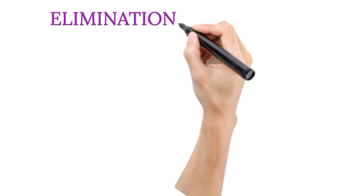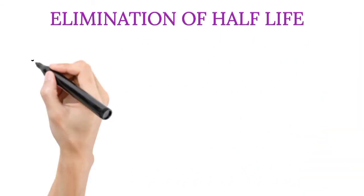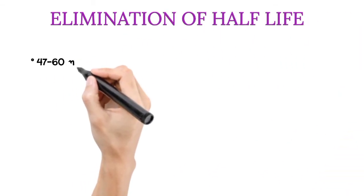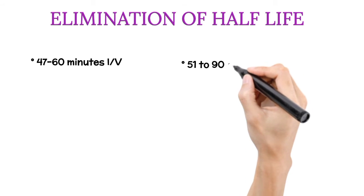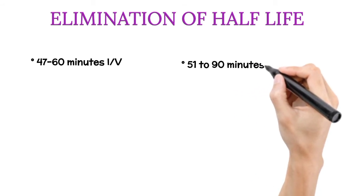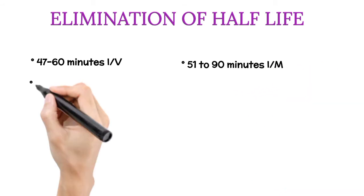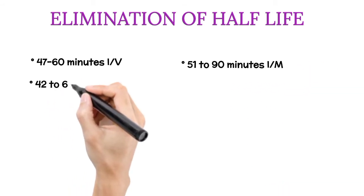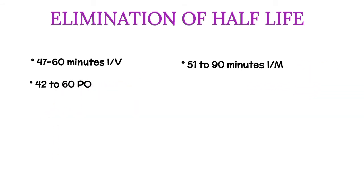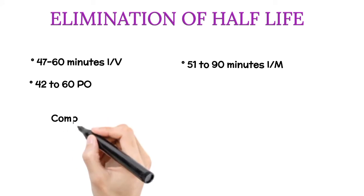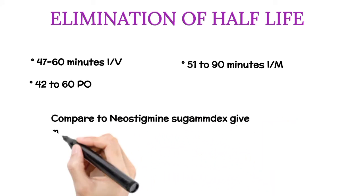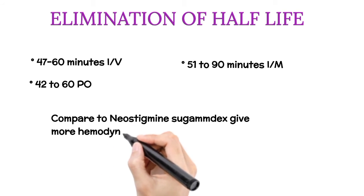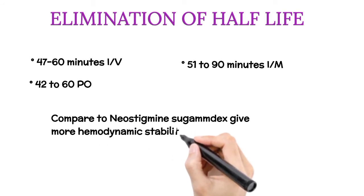Elimination half-life: 47–60 minutes intravenous, 51–90 minutes intramuscular, and 42–60 minutes orally. In children, the half-life is less. Compared to neostigmine, sugammadex gives more hemodynamic stability.